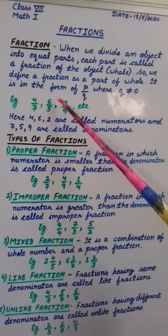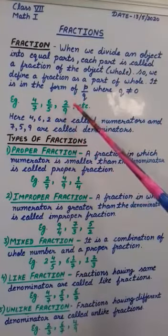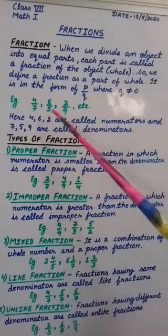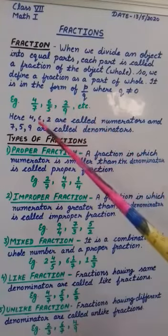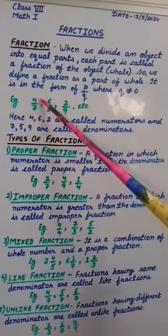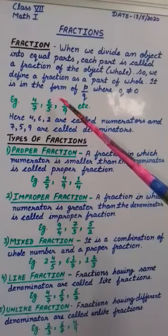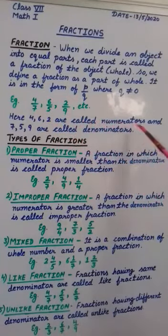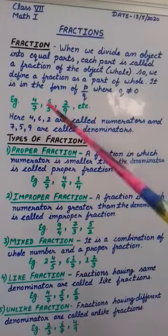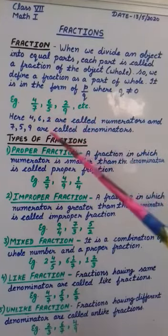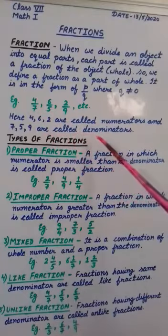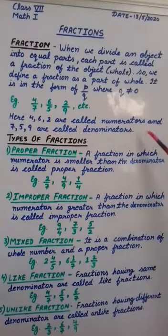Now see some examples here: 4 by 7, 6 by 5, 2 by 9. These all are examples of fractions. Here the numbers above — 4, 6, 2 — are called numerators, and the numbers below — 7, 5, 9 — are called denominators. So this is about a fraction.